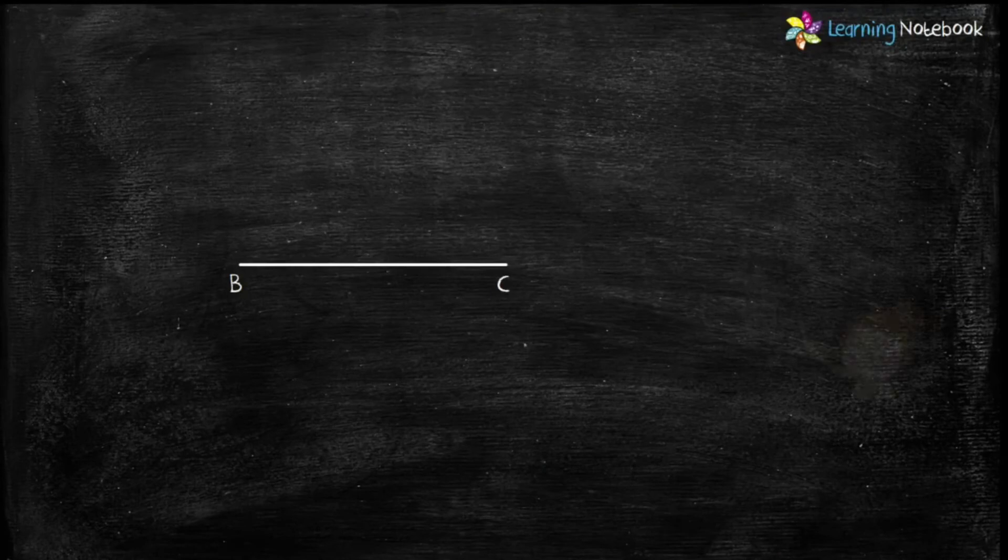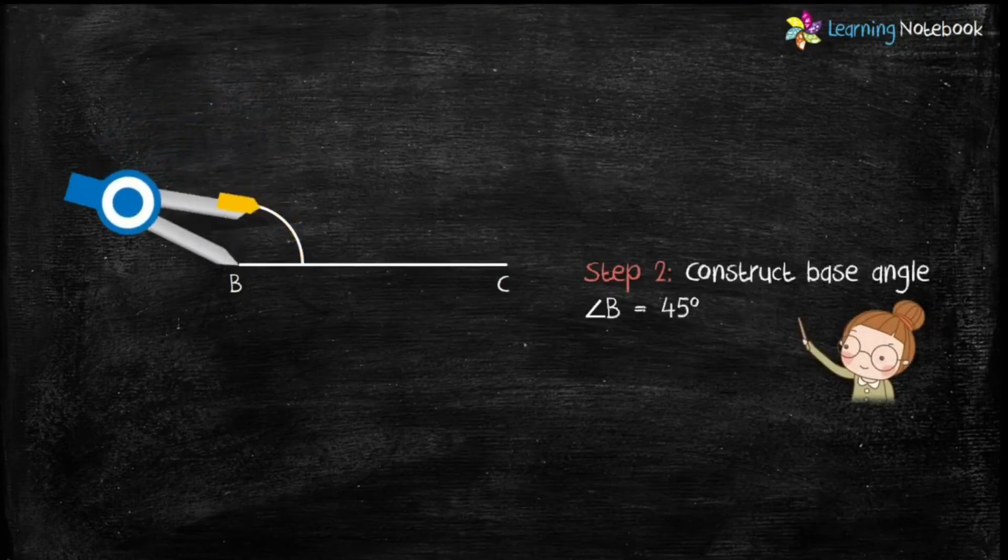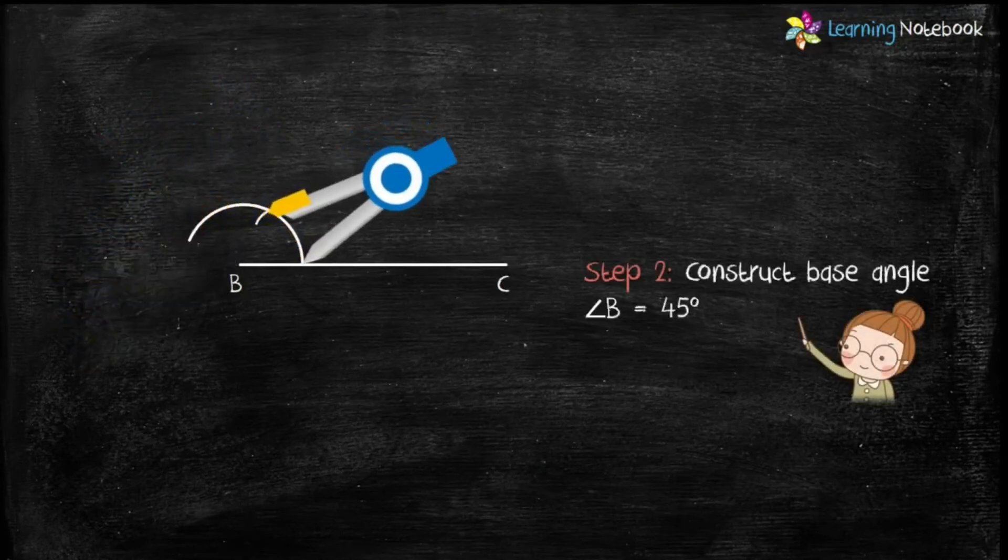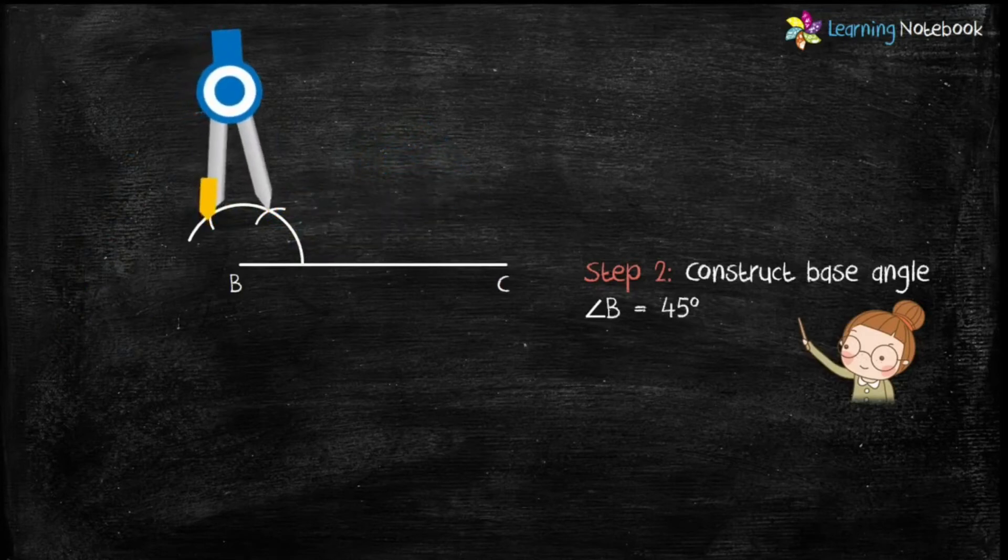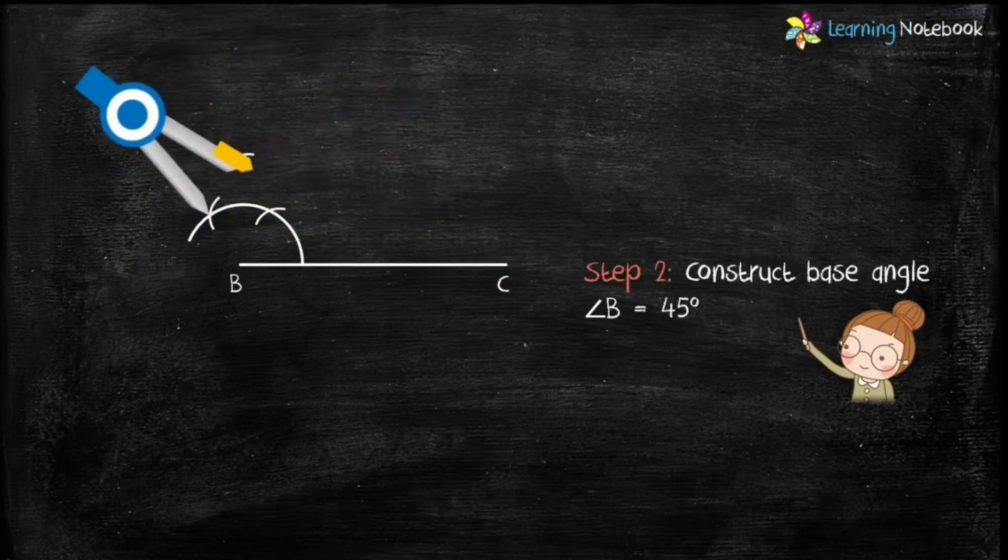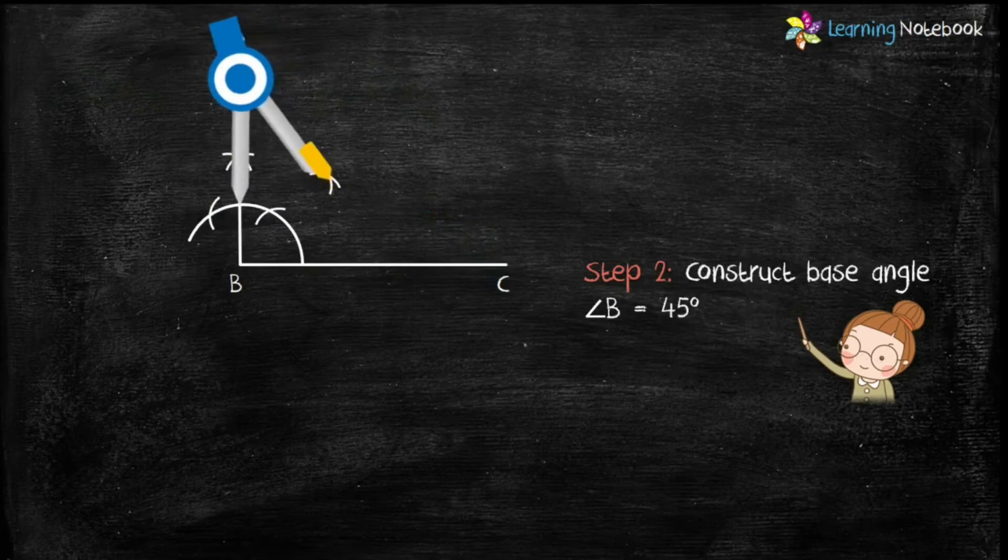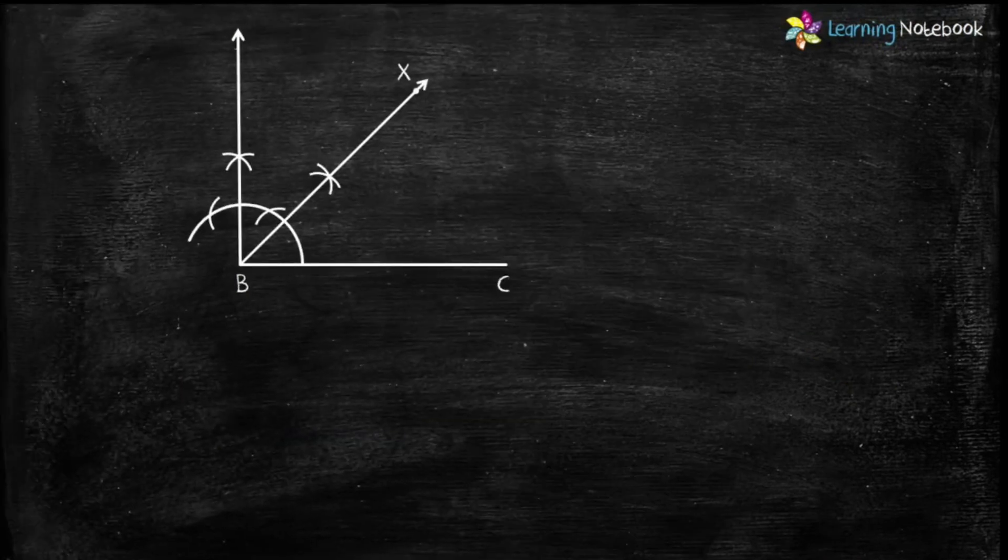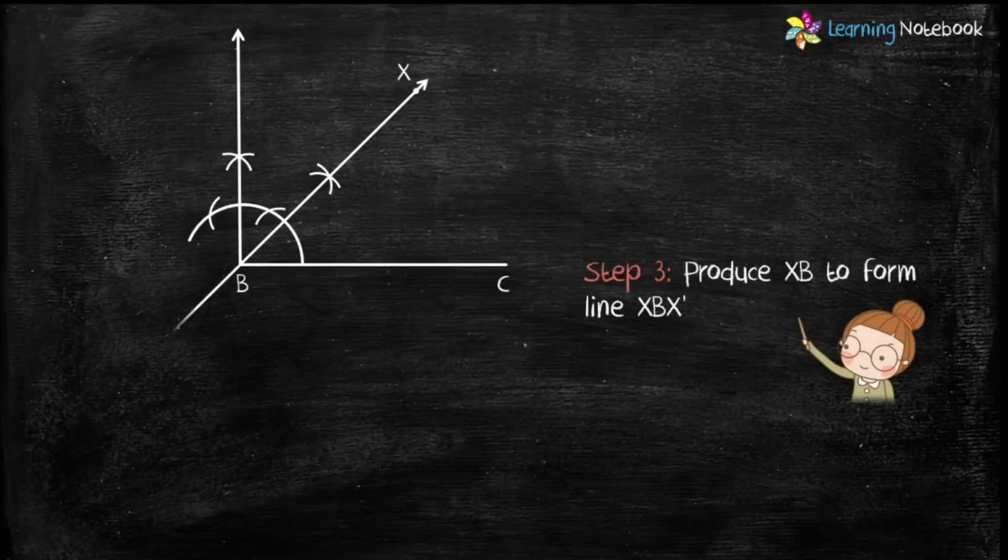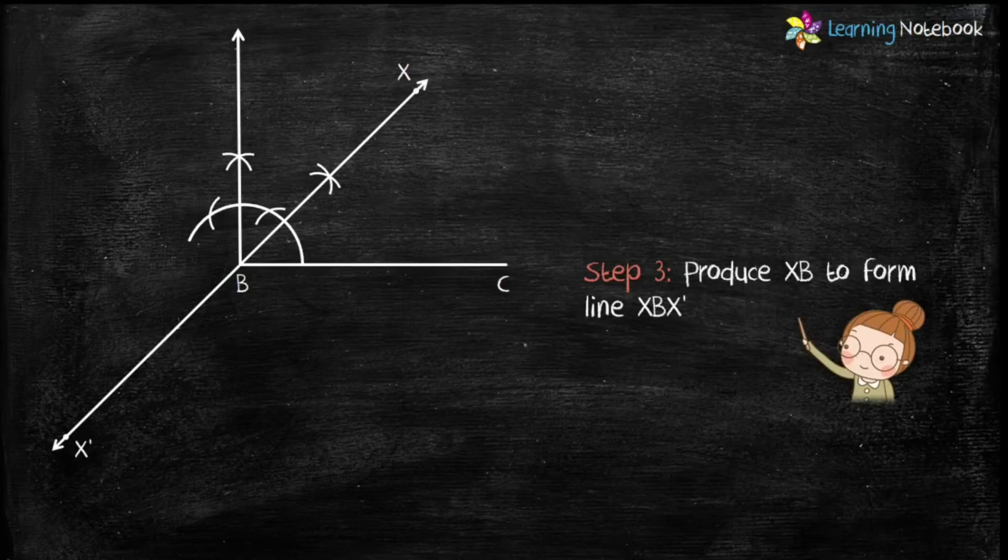Step 2 is construct base angle which is B equals to 45 degrees. Students you may refer to part 7 of this chapter to learn step by step construction of angle of 45 degrees. In step 3, produce XB to form line XBX dash.